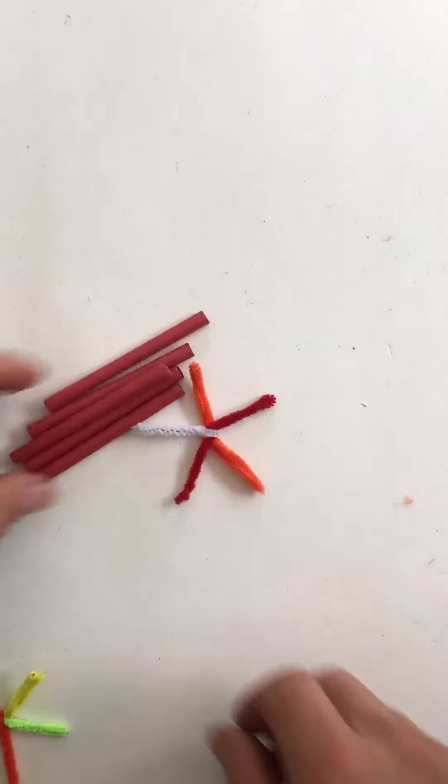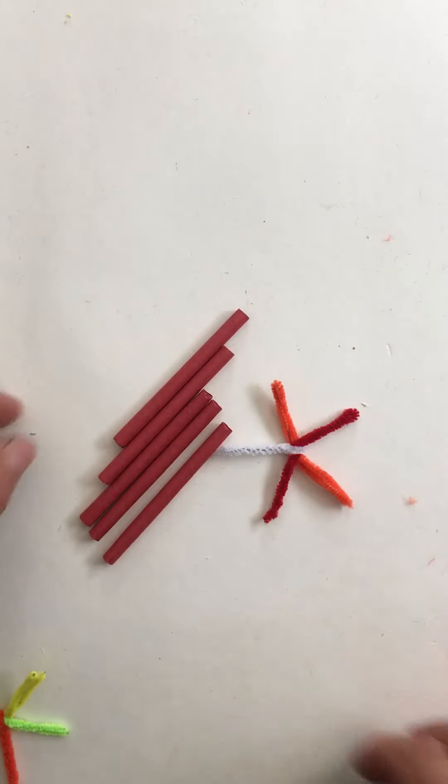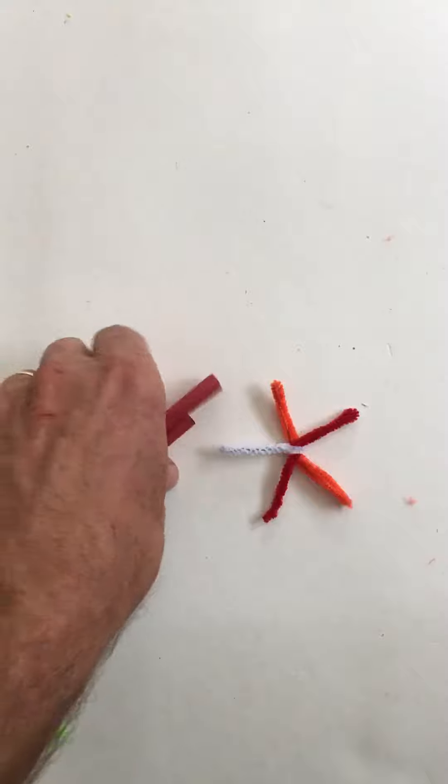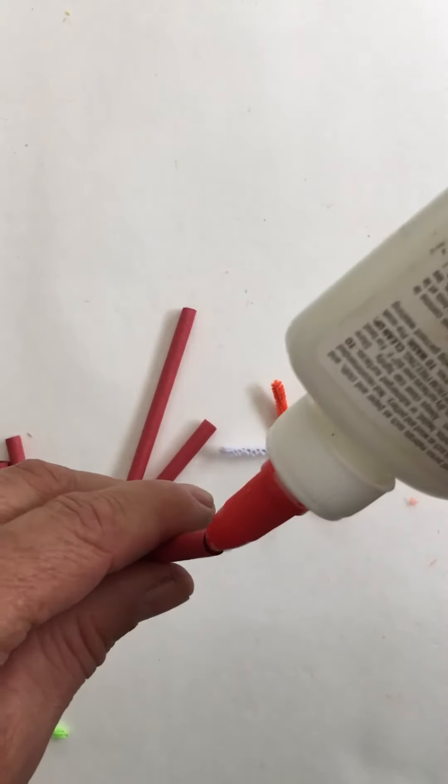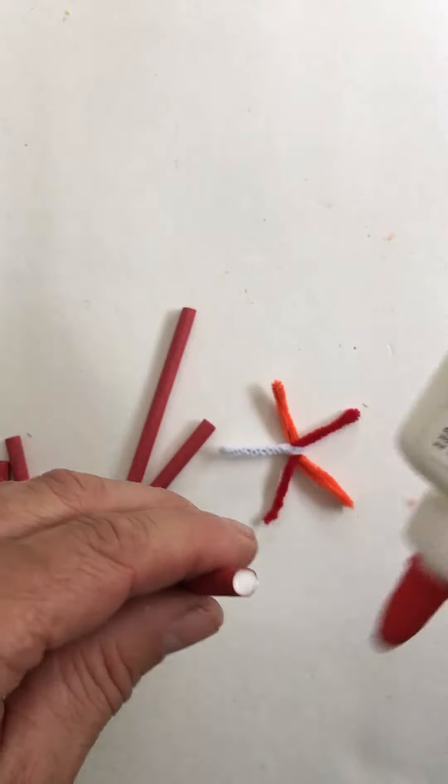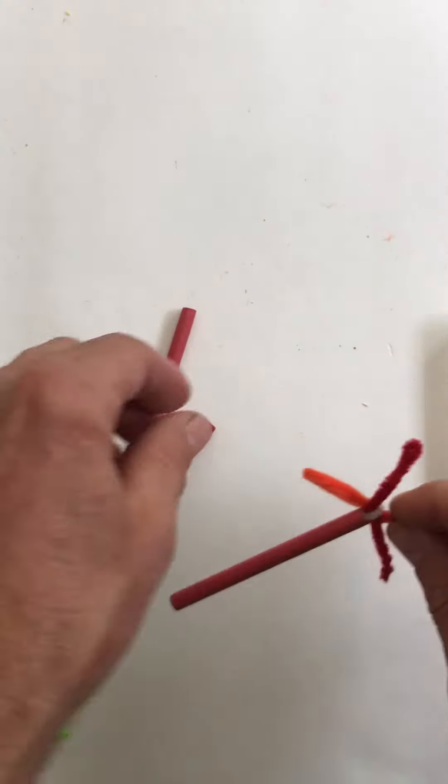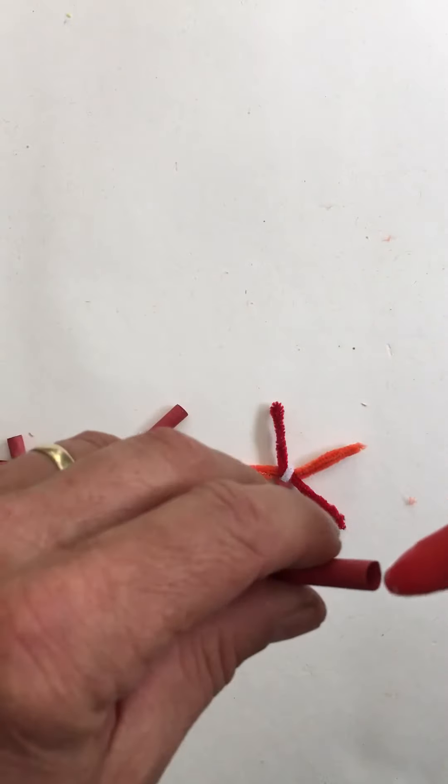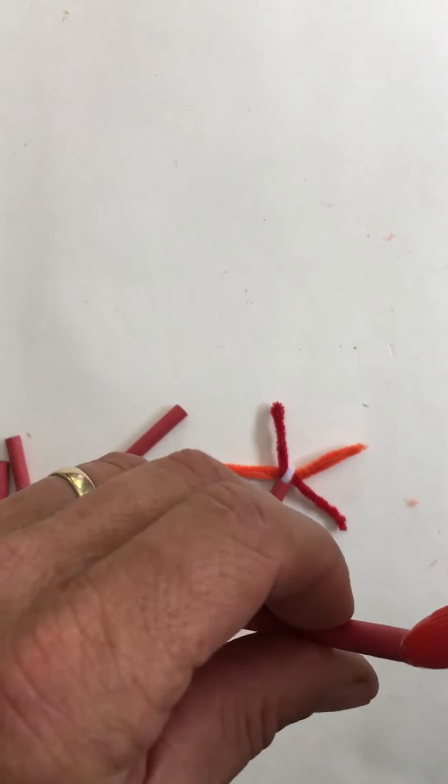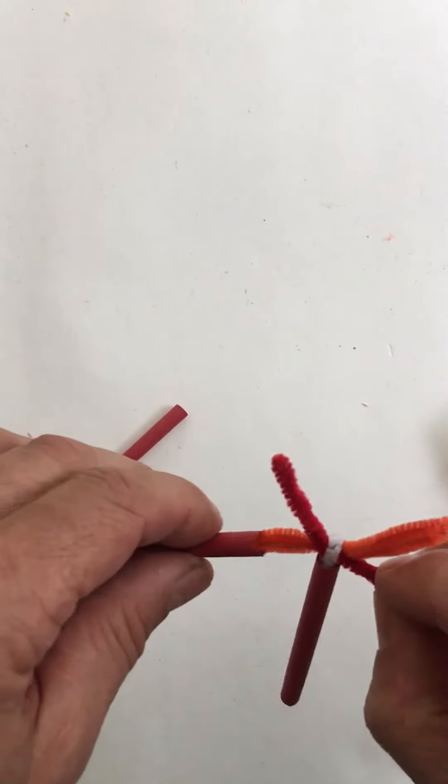And then you need five straws, five of the short struts, either red or yellow. And on each one, we'll put some glue and put it in there. Put some glue, put it in there.